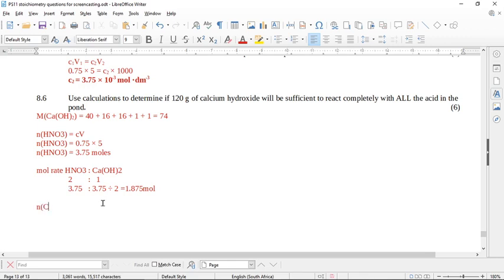The number of moles of calcium hydroxide is equal to M over M. So the number of moles of calcium hydroxide is going to be 120, which is from here in the question, divided by 74 because remember I worked it out earlier. So the number of moles of calcium hydroxide is 120 divided by 74, which is 1.62.